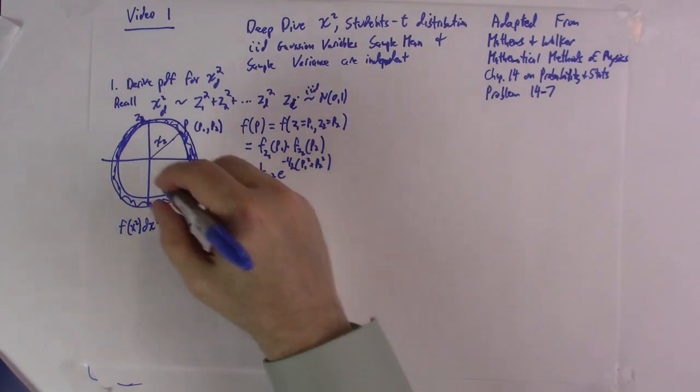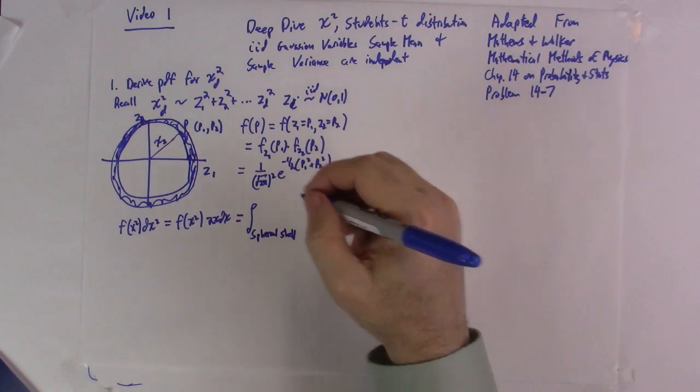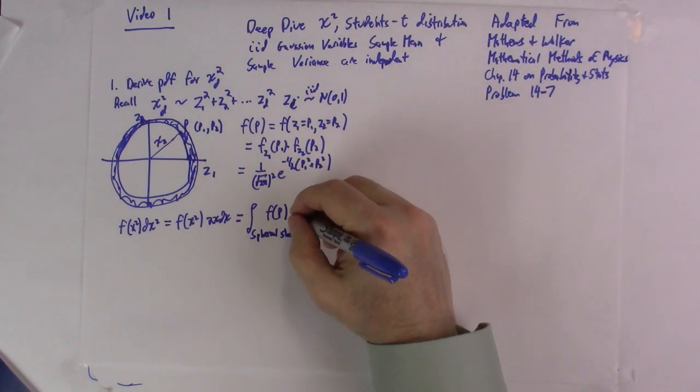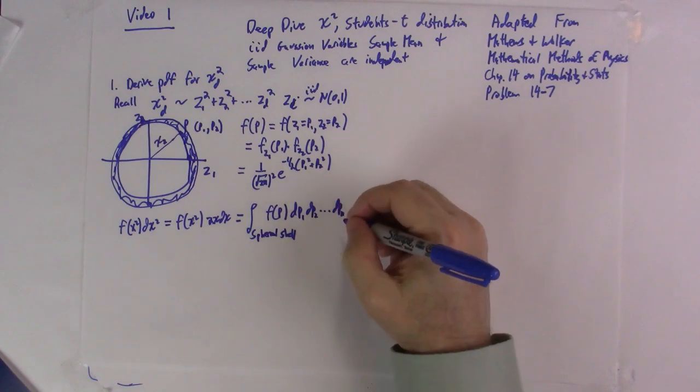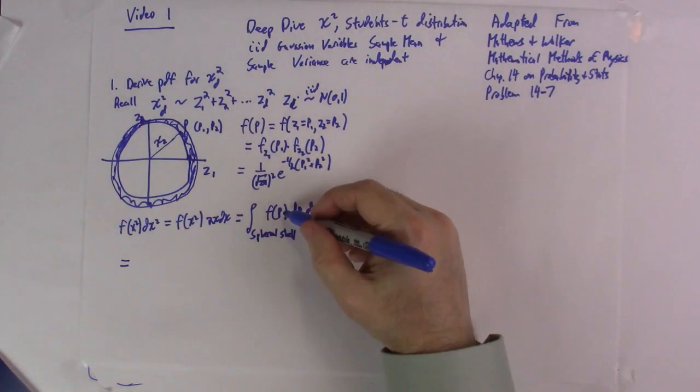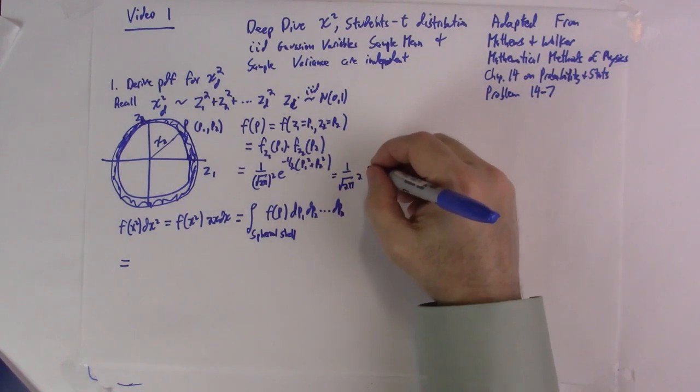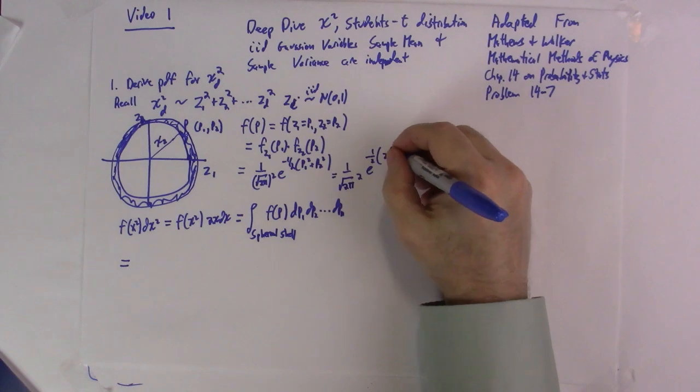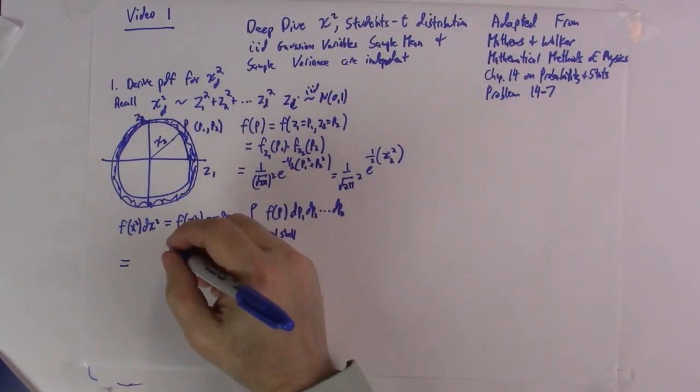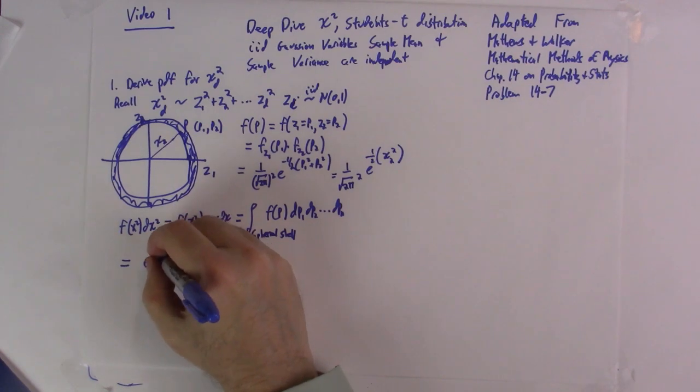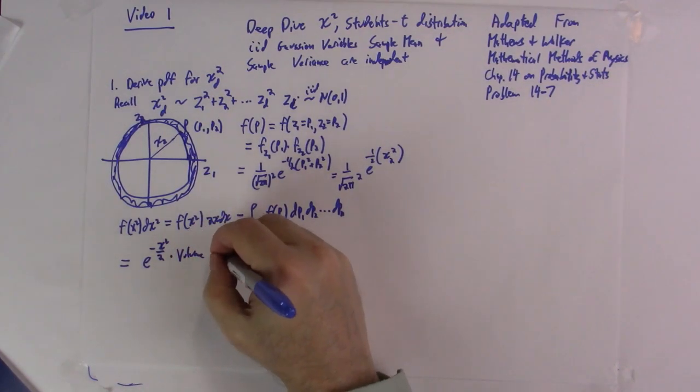But this is equal to the integral, I'm going to call it a spherical shell. In two dimensions it's just a circular ribbon of the probability density. And then we would have like dp1, dp2, up to dpn. And because F of p is just, I'm going to write this in d dimensions in a second, it's chi in two dimensions squared. Because every one of these things is the same value, this is just equal to e to the minus chi-squared over 2 times the volume of the spherical shell.